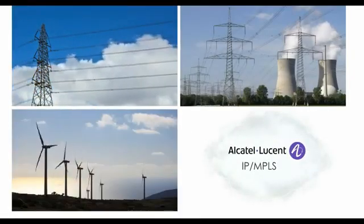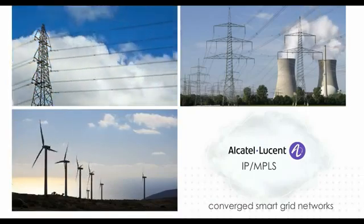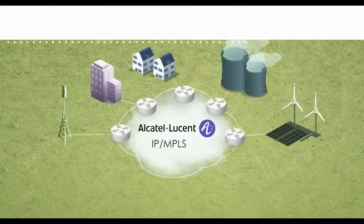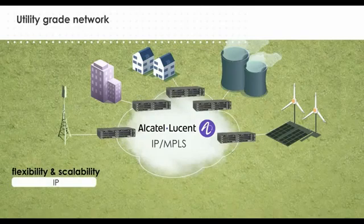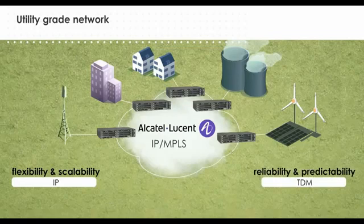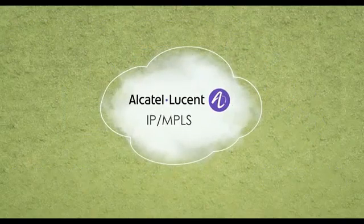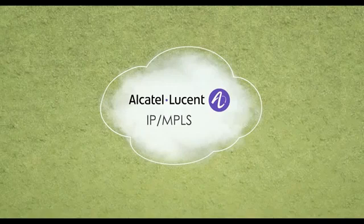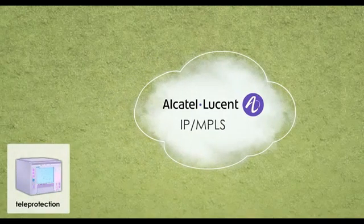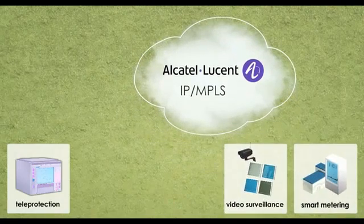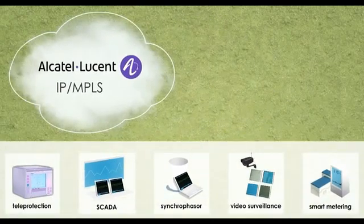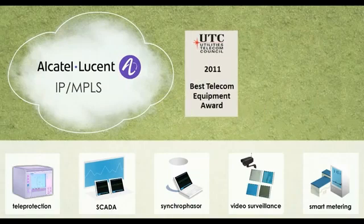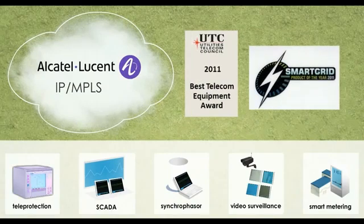IP MPLS is the technology of choice for utilities implementing converged smart grid communications networks. Choosing Alcatel-Lucent IP MPLS products, utilities can implement a utility-grade communications network that supports the flexibility and scalability of IP while maintaining the reliability and predictability of traditional TDM mission-critical networks. An Alcatel-Lucent IP MPLS network supports the most critical and latency-sensitive utility application — teleprotection. This converged network simultaneously provides highly secure, reliable, and manageable VPN communication services for multiple applications. The Alcatel-Lucent IP MPLS solution has been recognized by the utility industry as best telecom product and smart grid product of the year.